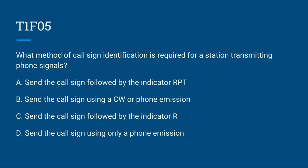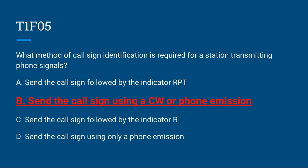T1F05: What method of call sign identification is required for a station transmitting phone signals? A. Send the call sign followed by the indicator RPT. B. Send the call sign using a CW or phone emission. C. Send the call sign followed by the indicator R. Or D. Send the call sign using only a phone emission. Correct answer is B: send the call sign using a CW or phone emission.